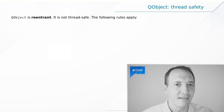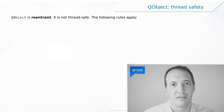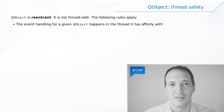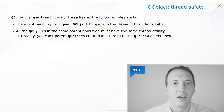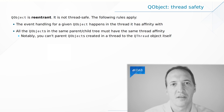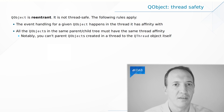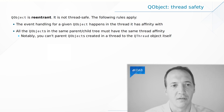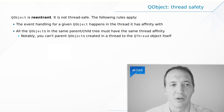QObject is reentrant — we can use different object instances in different threads — but we have to be careful because it's not thread safe. The event handling happens in a single thread. Also, all of the parents and children in the same tree of objects all have to live in the same thread. That's why, if you remember from a previous video where we created a QThread instance inside of a worker object, the QThread instance cannot have a parent — it needs to be created with no parent because it lives in a different thread than the worker. And when we move an object to a different thread, all of the children are going to be moved as well.